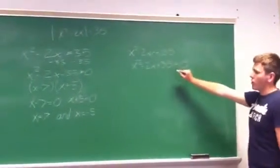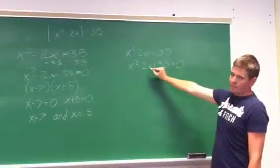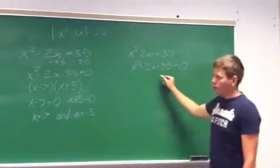This side here, there are no two numbers that multiplied together are going to give you 35 and added together are going to give you negative 2. So this side, you're going to want to use the quadratic formula,